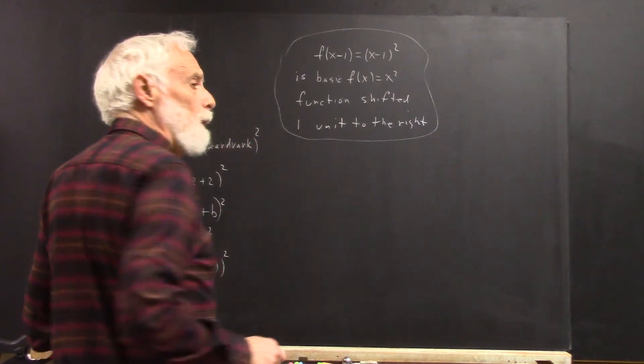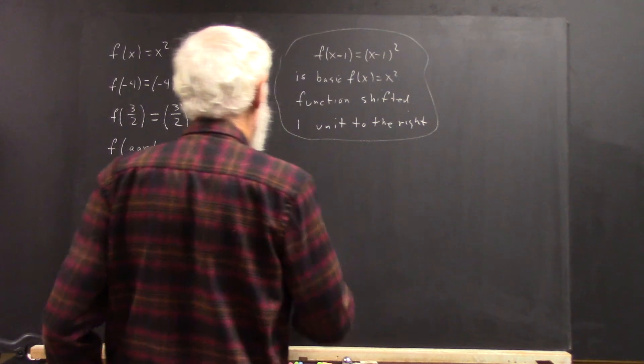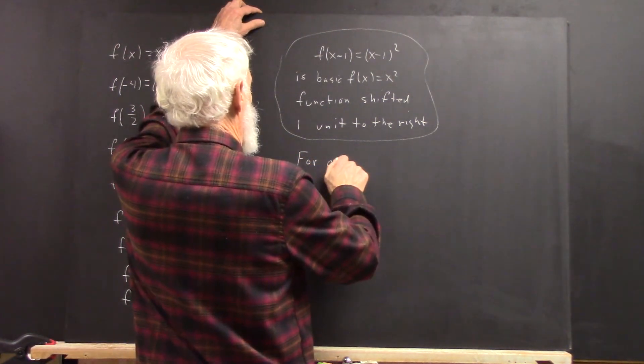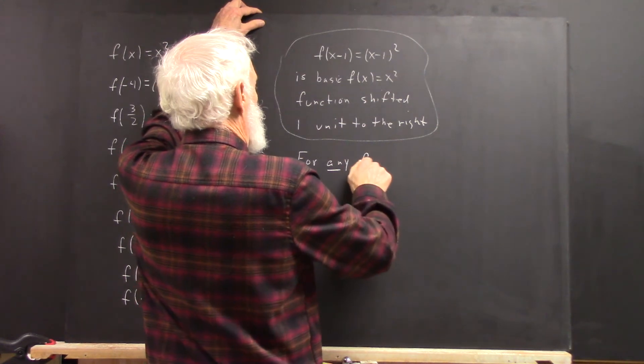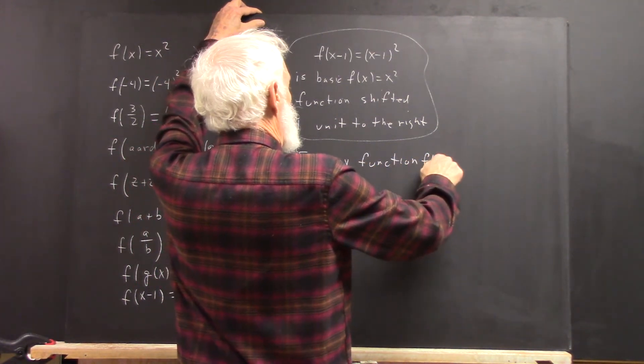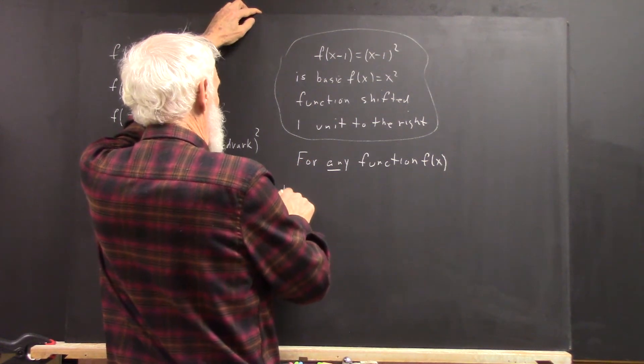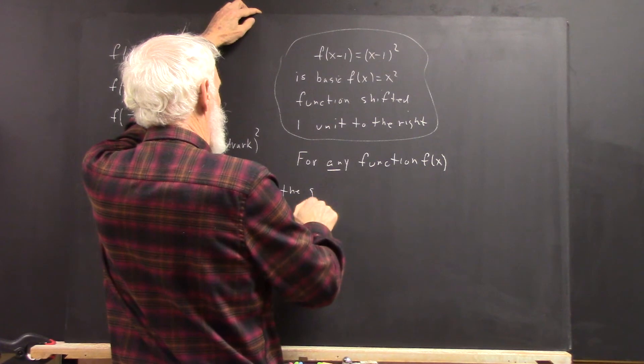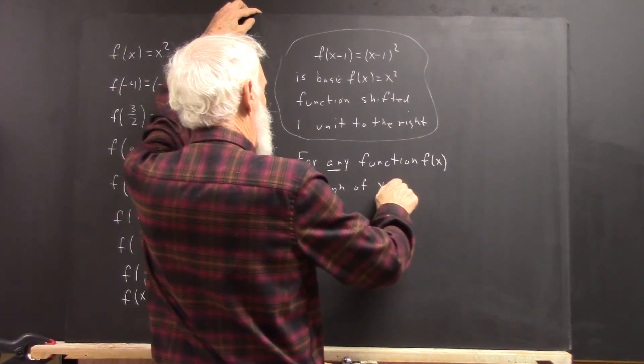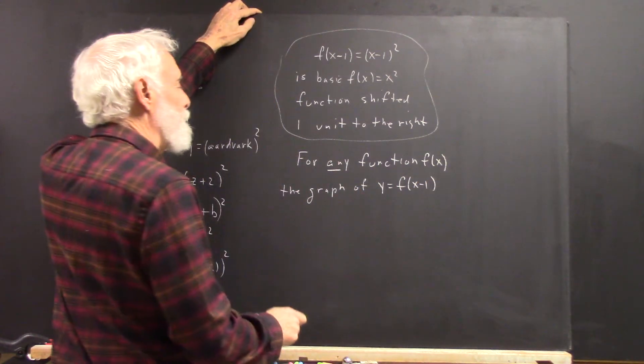And I'm going to kind of throw in that a little bit. Okay, well you know what? This is true for any function. For any function f of x, the graph of y is f of x minus 1.